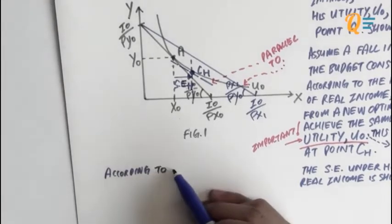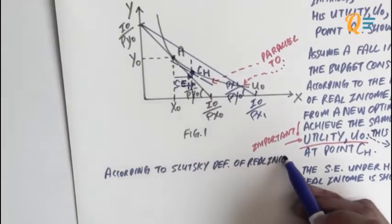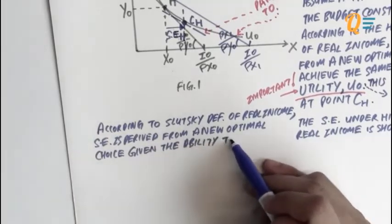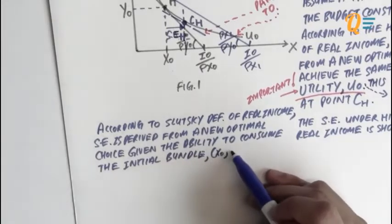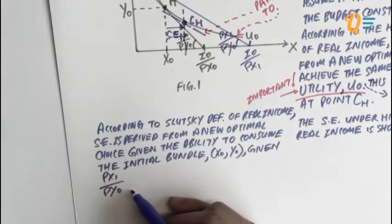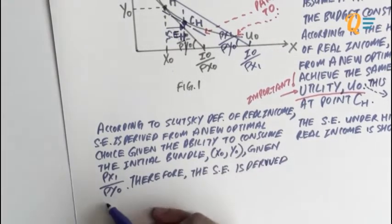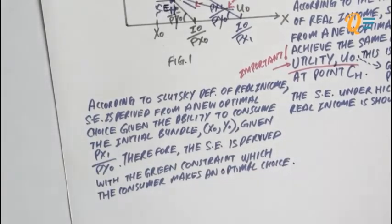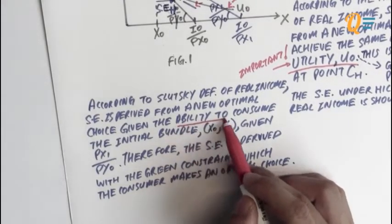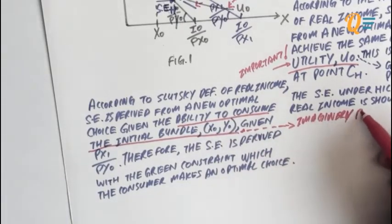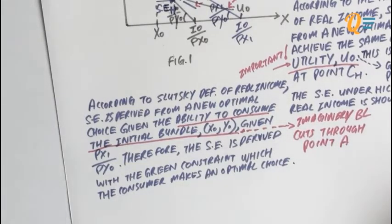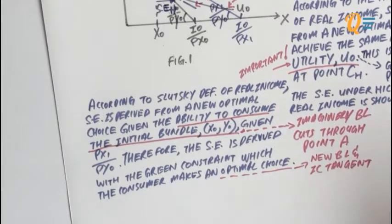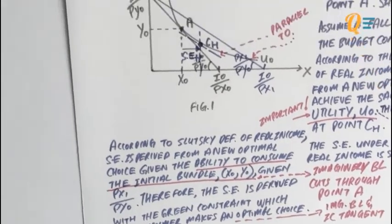Now that we've gotten Hicksian settled, let's move on to Slutsky. According to the Slutsky definition of real income, the SE is derived from a new optimal choice given the ability to consume the initial bundle, which is X0 and Y0, given price ratio PX1 over PY0. Therefore, the SE is derived with the green constraint on which the consumer makes an optimal choice. The ability to consume the initial bundle means the imaginary budget line is going to cut through point A in figure 1.